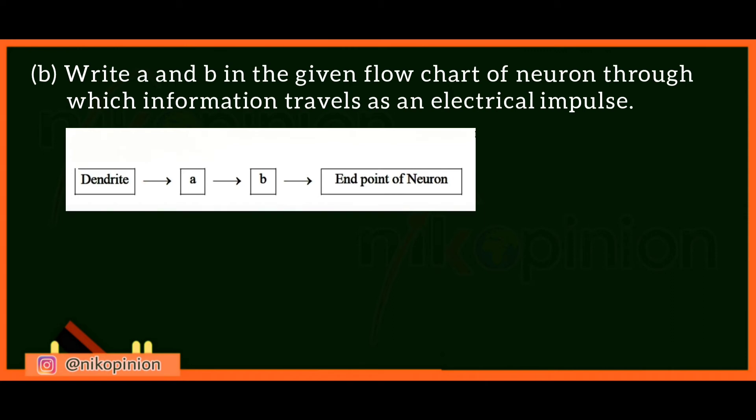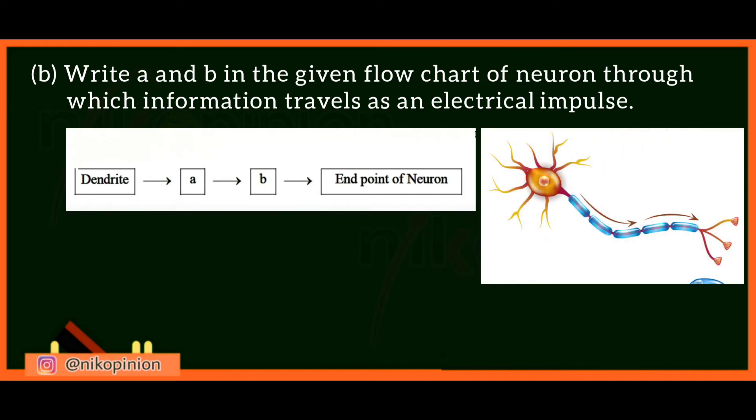The next question is to write A and B in the given flowchart of the neuron through which information travels as an electrical impulse. You have to remember the path of information travel. This question is for one mark, and the part A we discussed was also for one mark. So the total is a two marks question. Just remember that...